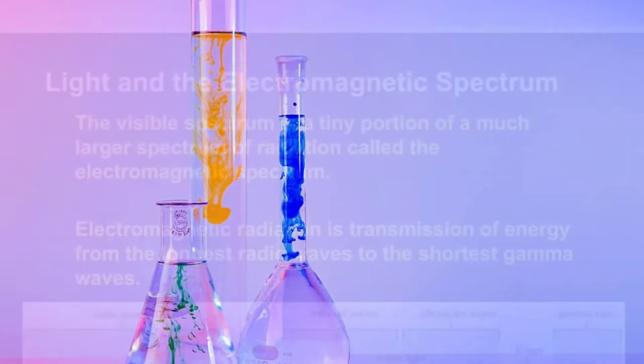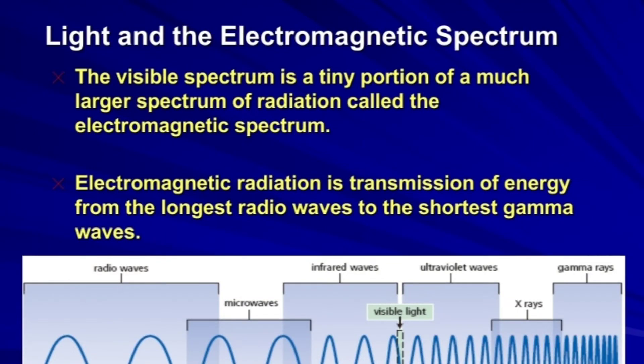The terms light, radiation, and electromagnetic wave can all be used to explain one concept: the electromagnetic spectrum. The visible spectrum is a tiny portion of this much larger spectrum. Electromagnetic radiation is the transmission of energy from the longest radio waves to the shortest gamma rays.